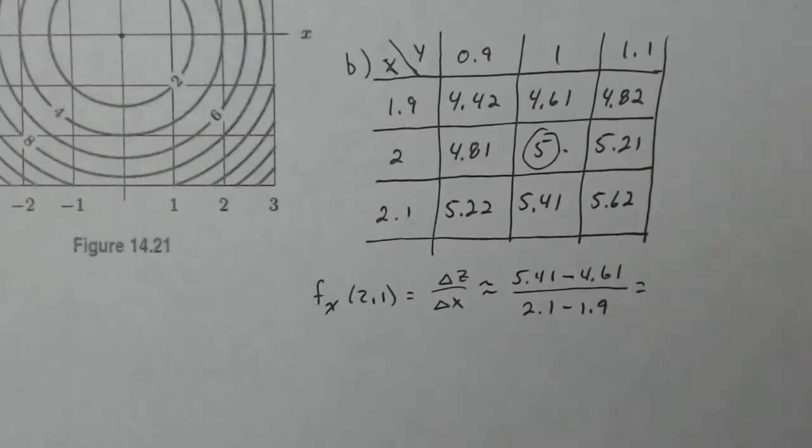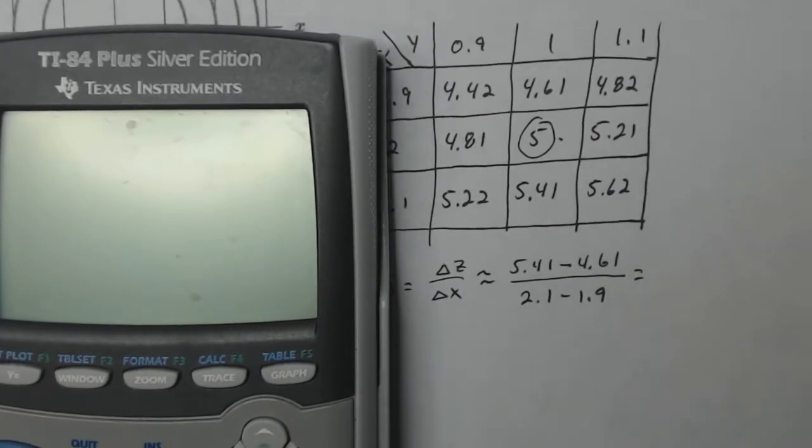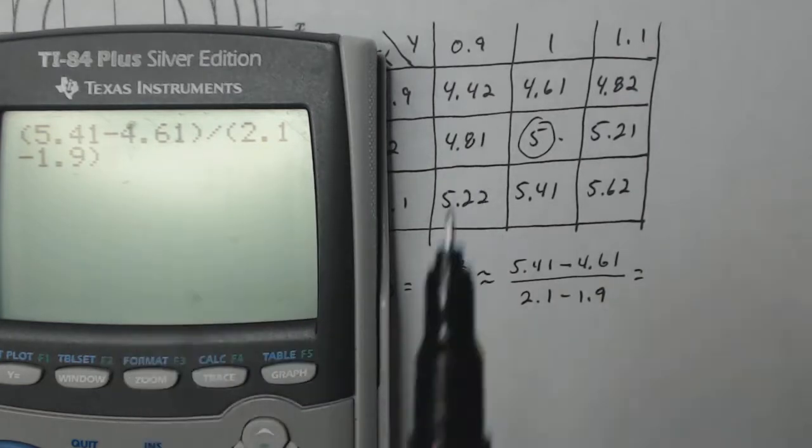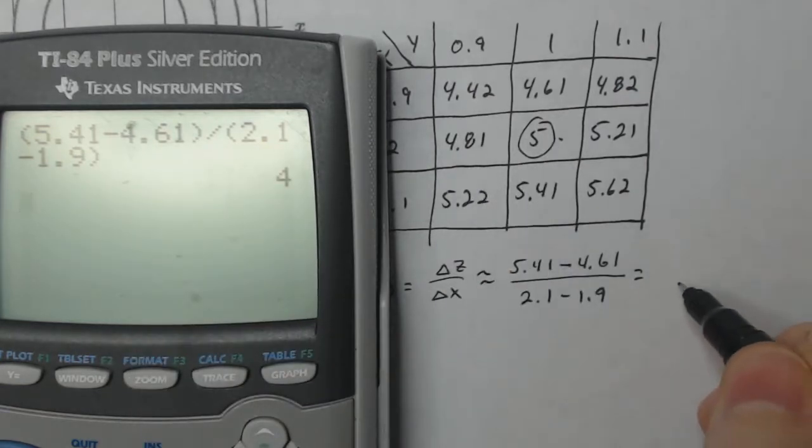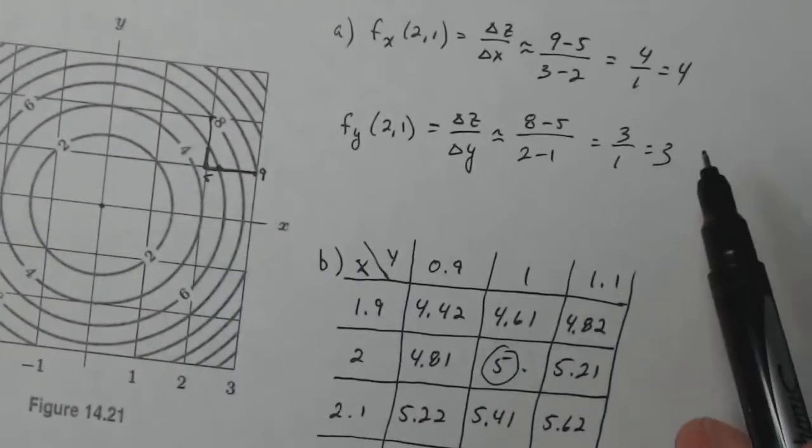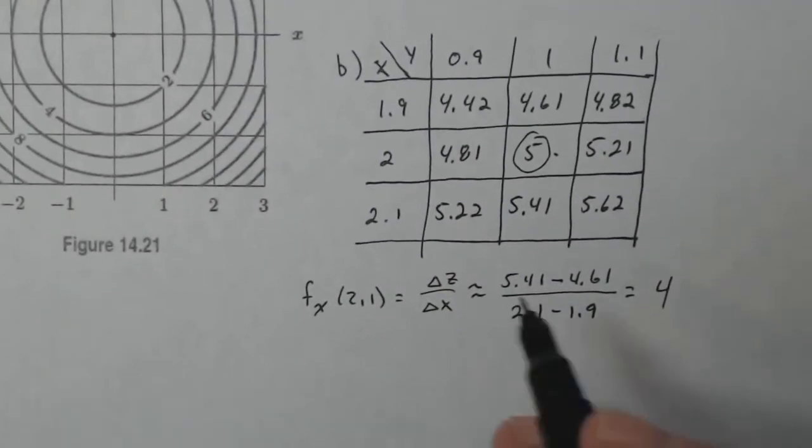Okay, so I do the change in the output over the change in the input. And if I use my trusty calculator to calculate this, and it is trusty, so 5.41 minus 4.61 divided by 2.1 minus 1.9. Did I do that right? 5.41 minus 4.61, 2.1 minus 1.9. Okay, so I get four. Hey, that's cool. That looks like it matches exactly what I estimated here. Huh, all right, that's pretty rare, but it's kind of cool.